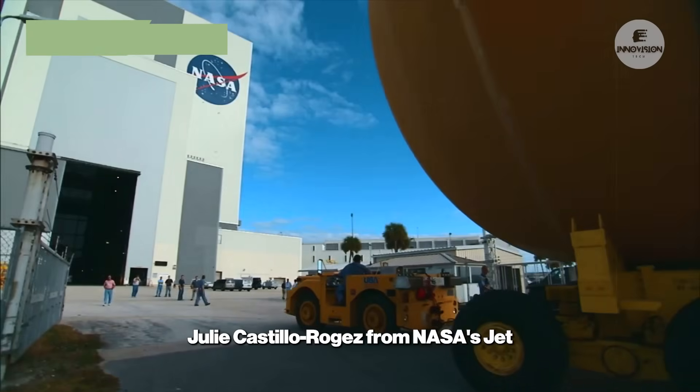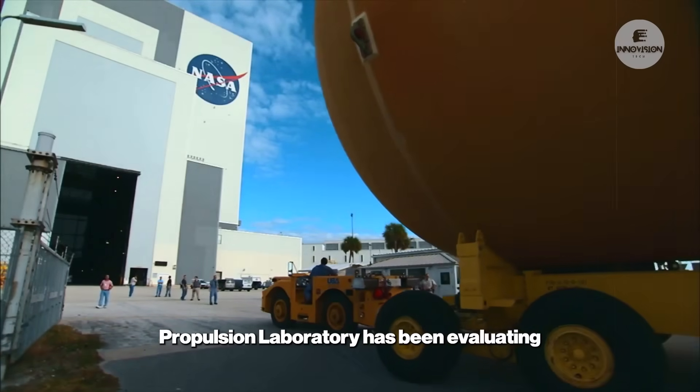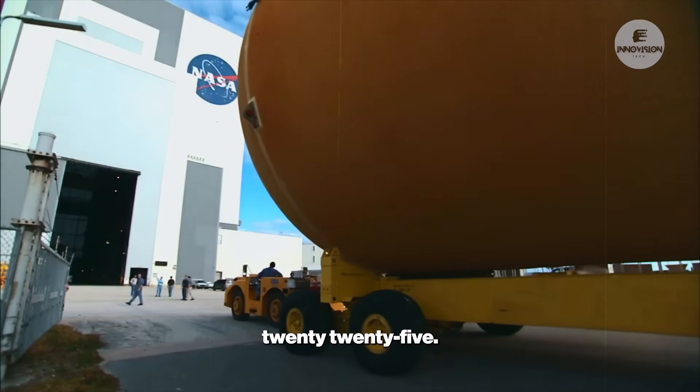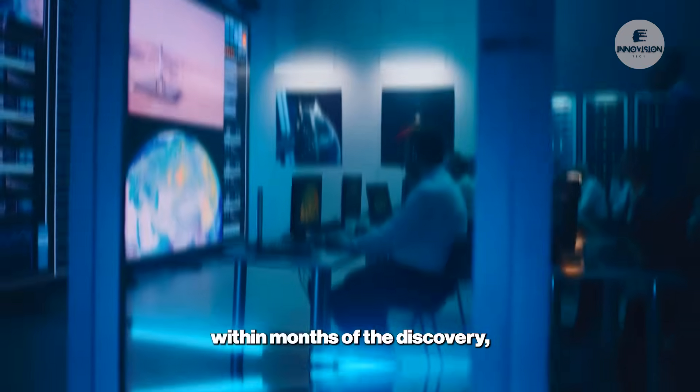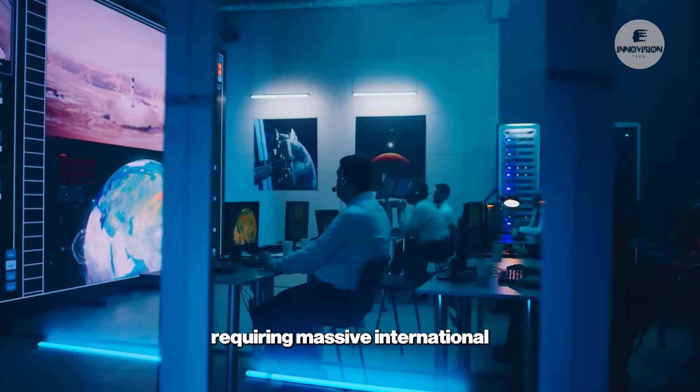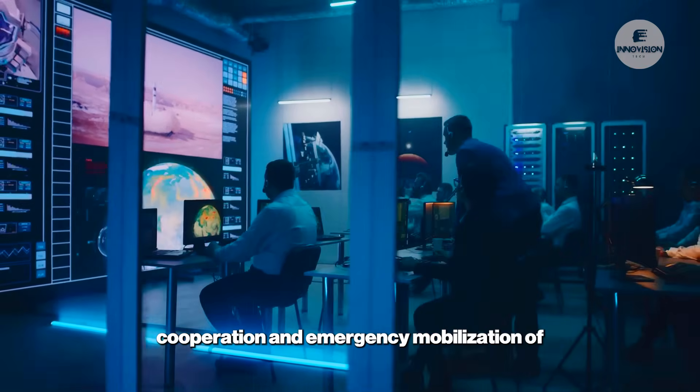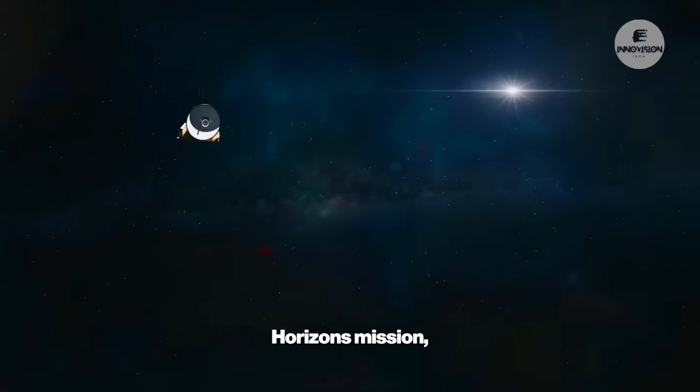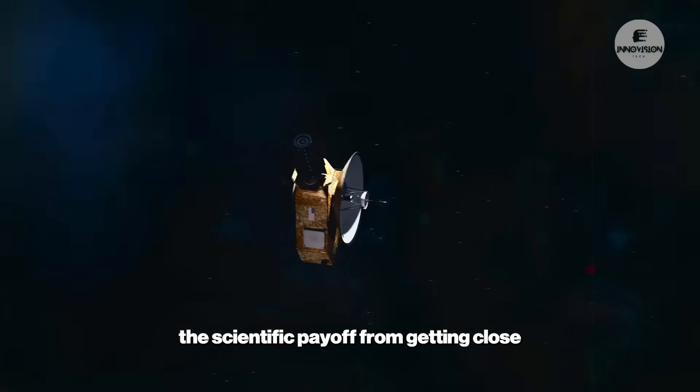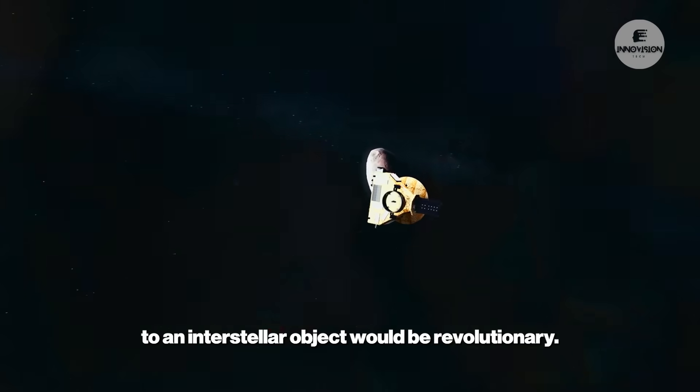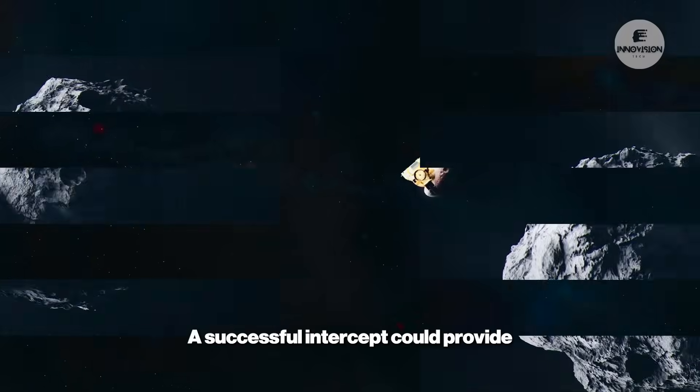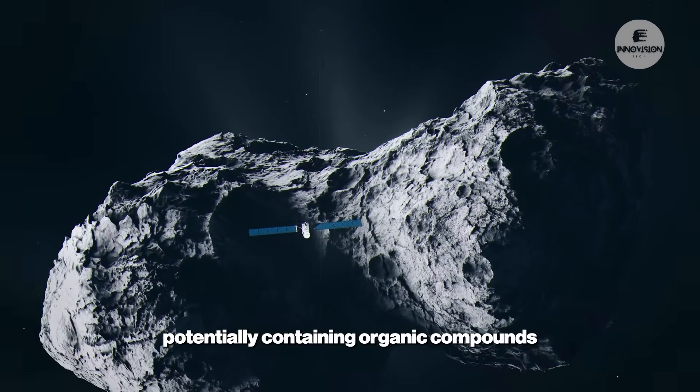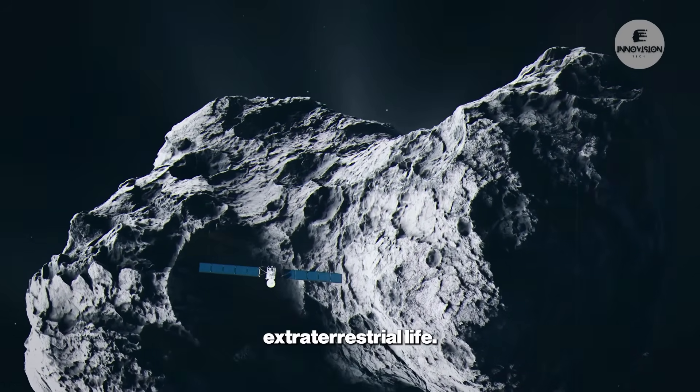Julie Castillo-Roges from NASA's Jet Propulsion Laboratory has been evaluating existing spacecraft designs that could potentially reach the comet during its closest approach to Earth in December 2025. Such a mission would need to launch within months of the discovery, requiring massive international cooperation and emergency mobilization of space resources. Alan Stern, principal investigator of the New Horizons mission, noted that while technically challenging, the scientific payoff from getting close to an interstellar object would be revolutionary. A successful intercept could provide direct samples of materials from another star system, potentially containing organic compounds or even microscopic signs of extraterrestrial life.